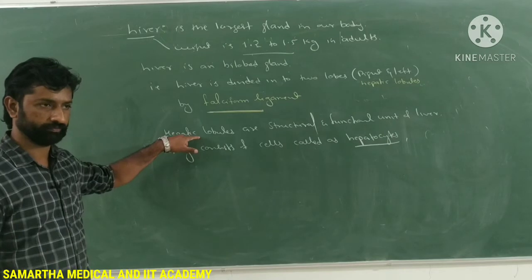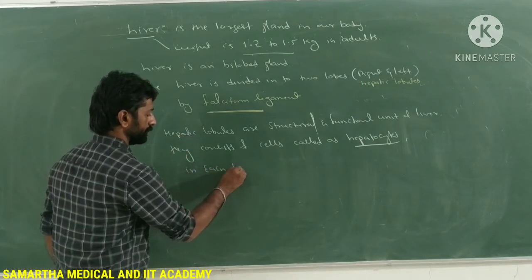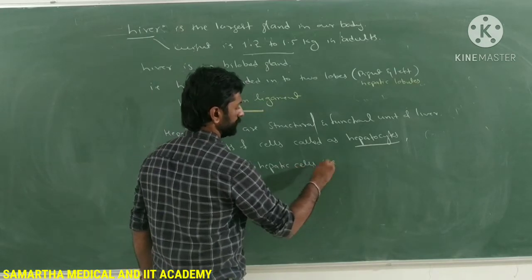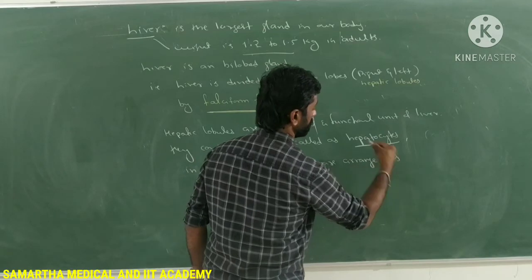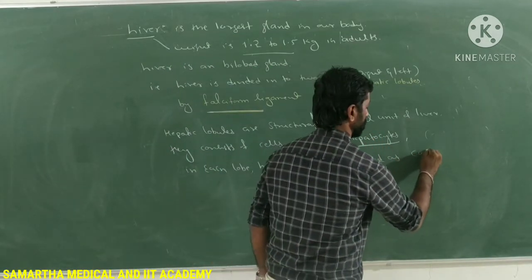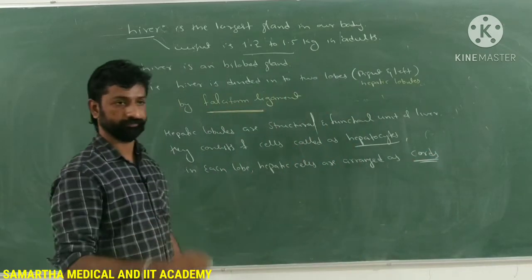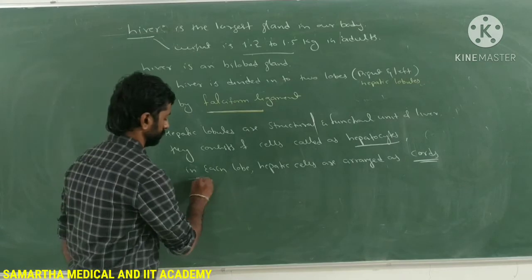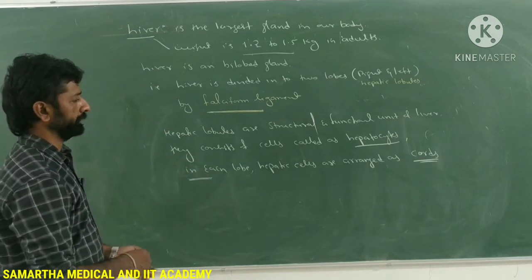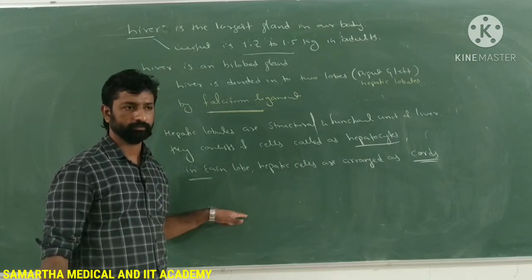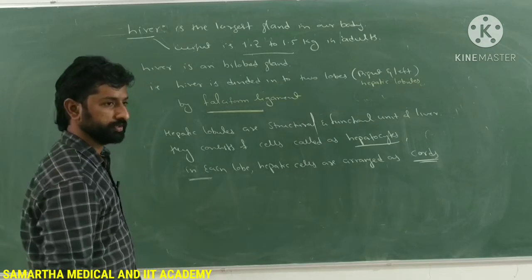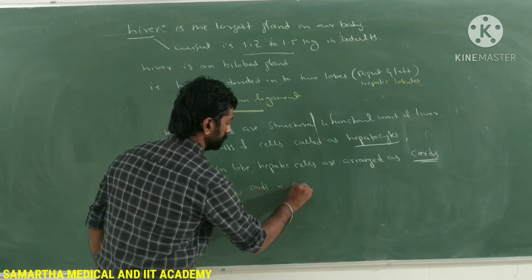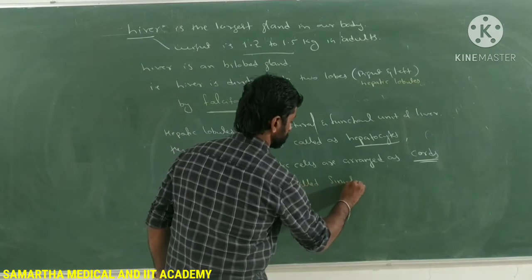Hepatocytes are arranged in the form of cords within each lobe — cords meaning strings. The space between these cords is called a sinusoid.